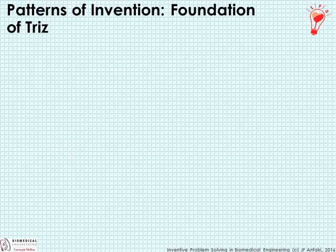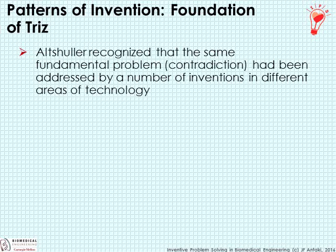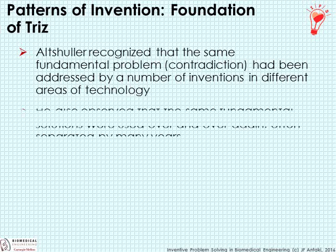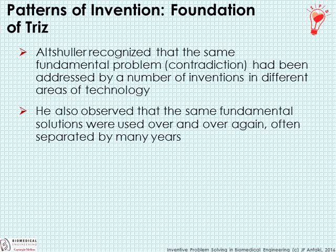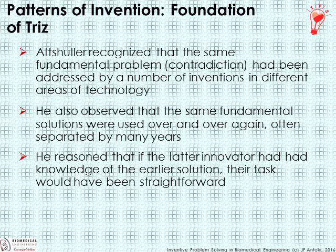One of the important underlying principles of TRIZ is that inventions follow a certain pattern. Altschuller recognized that the same fundamental problems — also known as contradictions — have been addressed over and over again by inventions in a similar way but in different areas of technology. He also observed that the same fundamental solutions were used repeatedly, often separated by many years.